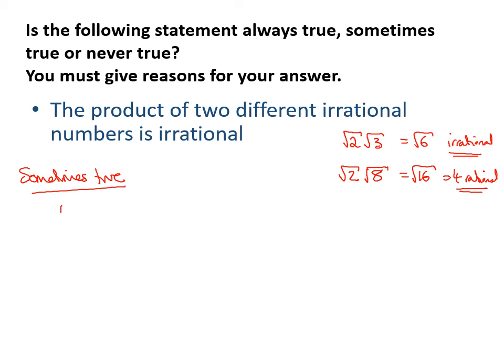I can say sometimes true. Find my case where it is not true, first of all, and that is root 2 and root 8. The product is rational. And where it is true, root 2 and root 3.